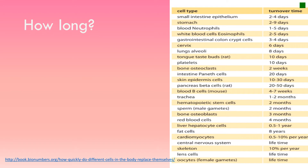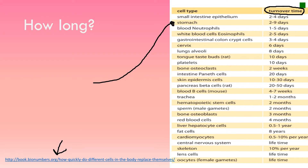Here's a source with a reference at the bottom, which identifies the turnover time — the time it takes for the cells of different parts of the body to replenish. This is the time for the whole cell population of a particular part to refresh. The stomach lining takes between two and nine days. Tongue taste buds refresh every 10 days. The lining of the trachea or windpipe takes one to two months.